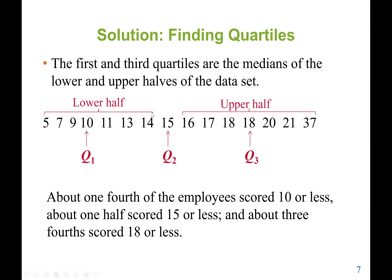To find Q1, we go to the left side. The first and third quartiles are the medians of the lower and upper halves of the data set. After sorting the data and finding the median as Q2, the lower half is to the left and the upper half is to the right of Q2. Q1 is the middle value of the lower half, and Q3 is the median of the upper half. So about one-fourth of the employees scored 10 or less, about one-half scored 15 or less, and about three-fourths scored 18 or less.